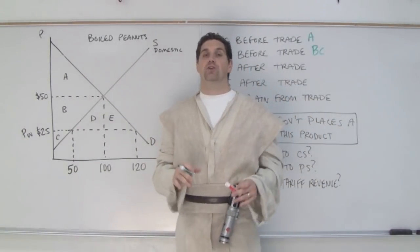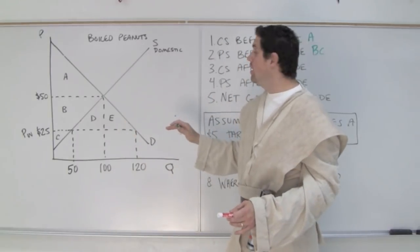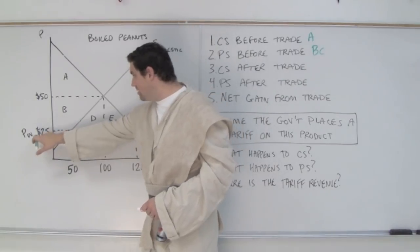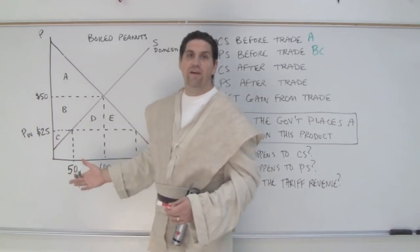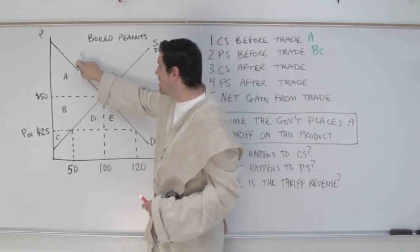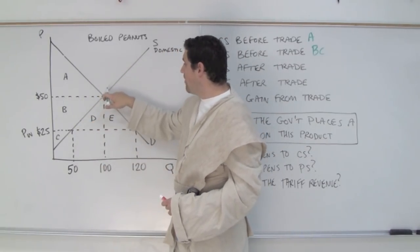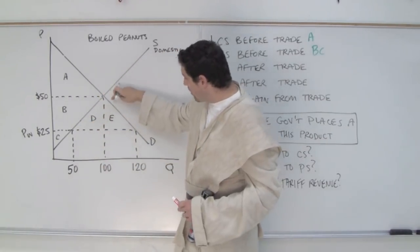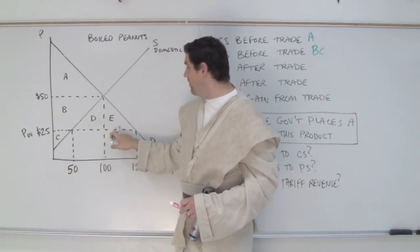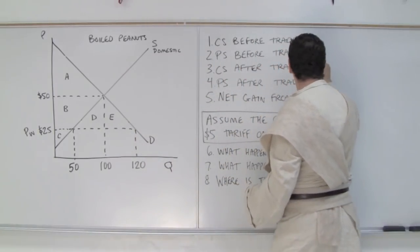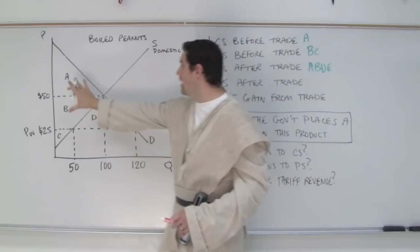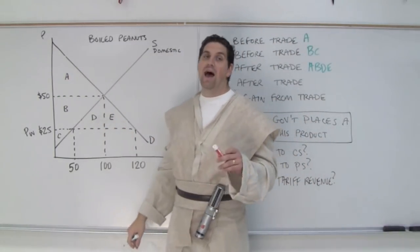How about after trade? What's consumer surplus now? Someone's willing to pay $100 — they didn't pay $50, they paid $25, because the world price W is $25. We can buy it from other countries cheaper. Someone's willing to pay $70, they paid $25. Someone's willing to pay $50, they paid $25. Now the person who's willing to pay $48 can now get it because they can buy it for $25. So consumer surplus has to be A, B, D, and E — this big giant triangle is consumer surplus after we trade.